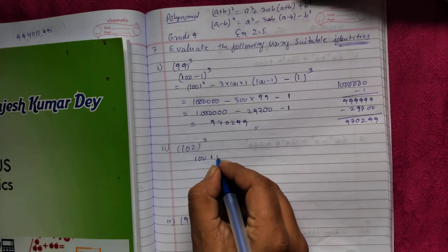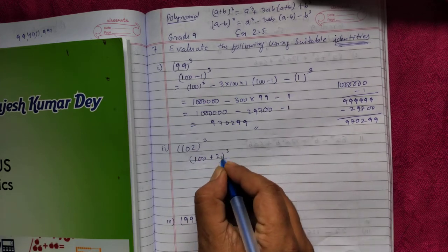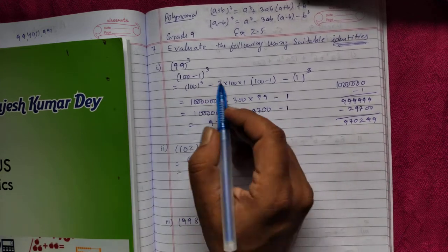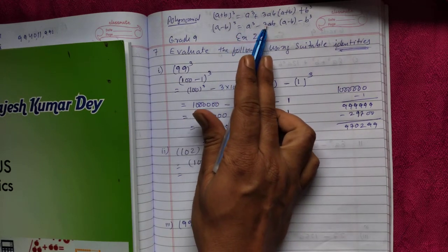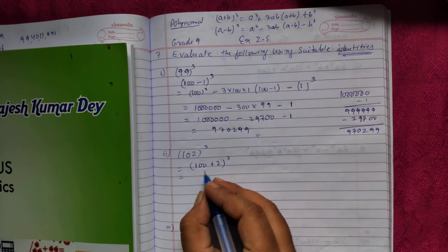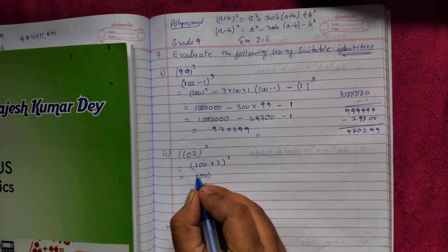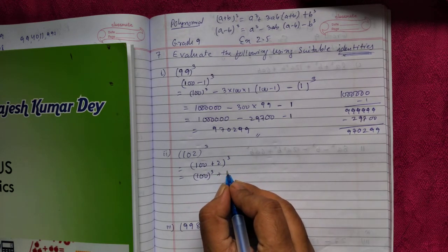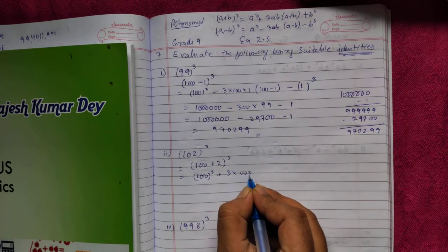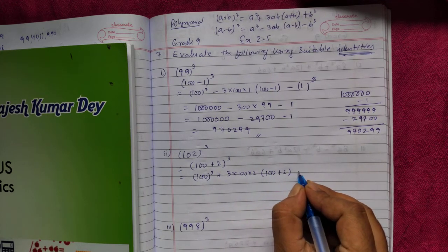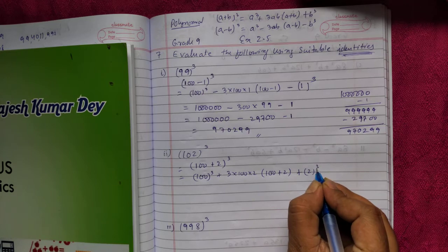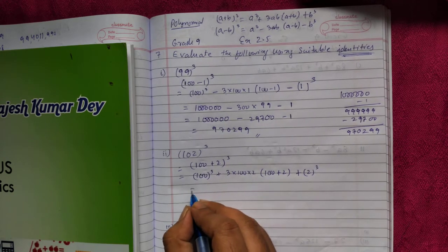Next is 102 whole cube. 102 means I can write 100 plus 2 whole cube. So this is in the form of A plus B whole cube, so I have to use A cube plus 3AB times A plus B plus B cube.